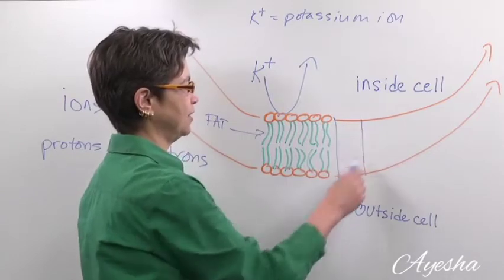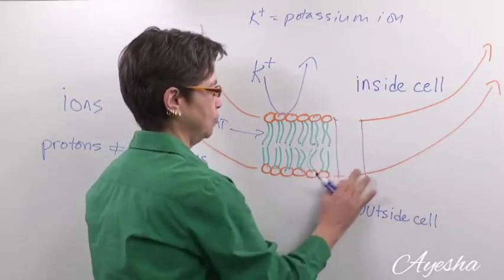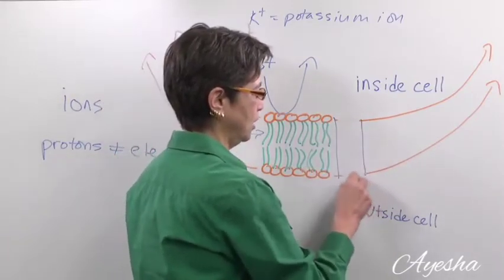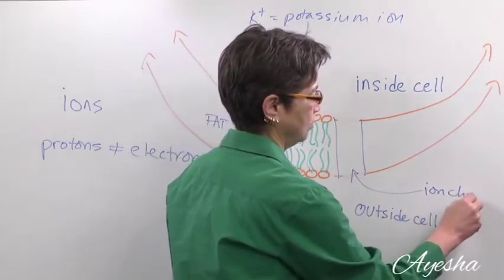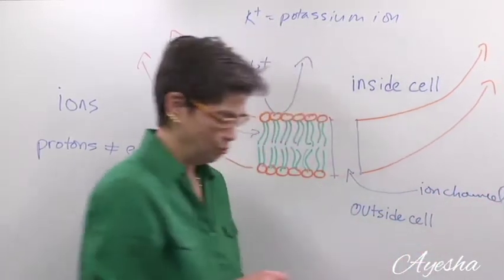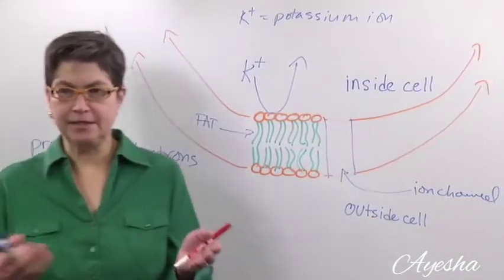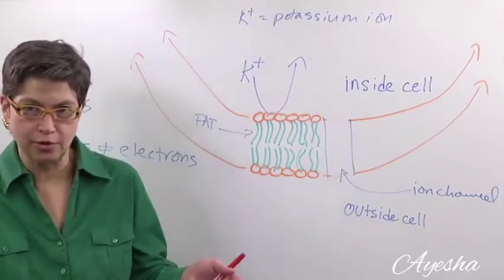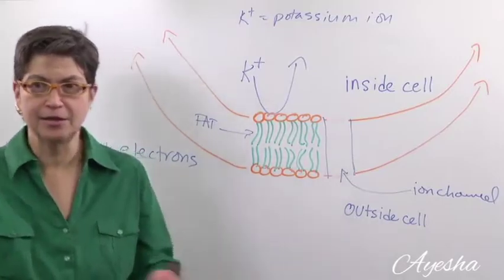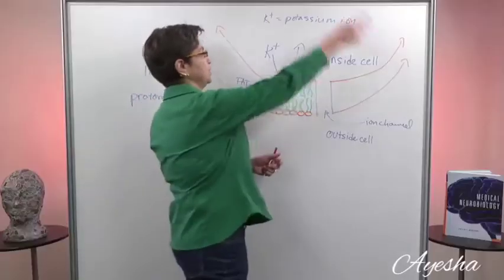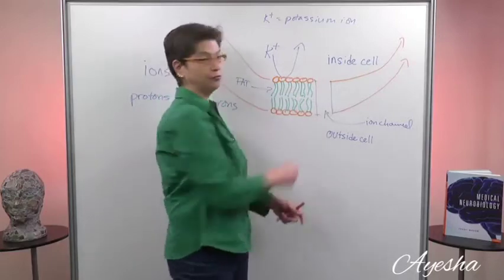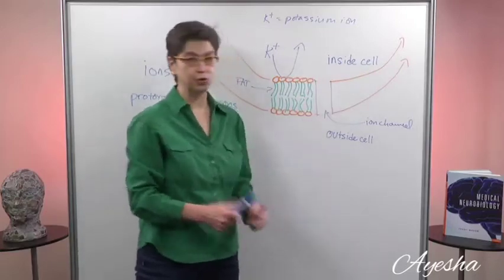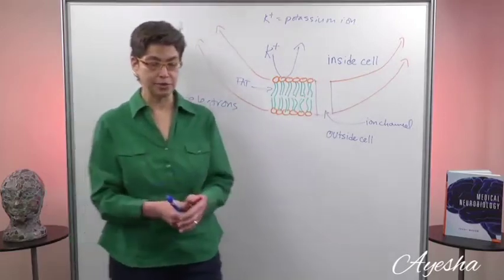And the only way for it to get through is via a special place, which we're going to call an ion channel. Okay. So this is nothing more fancy than essentially a cat door for the potassium ion. This is a door. This is the building. And this is the only way in or out. You cannot go through the walls. You got to go through a door and the door is called an ion channel.